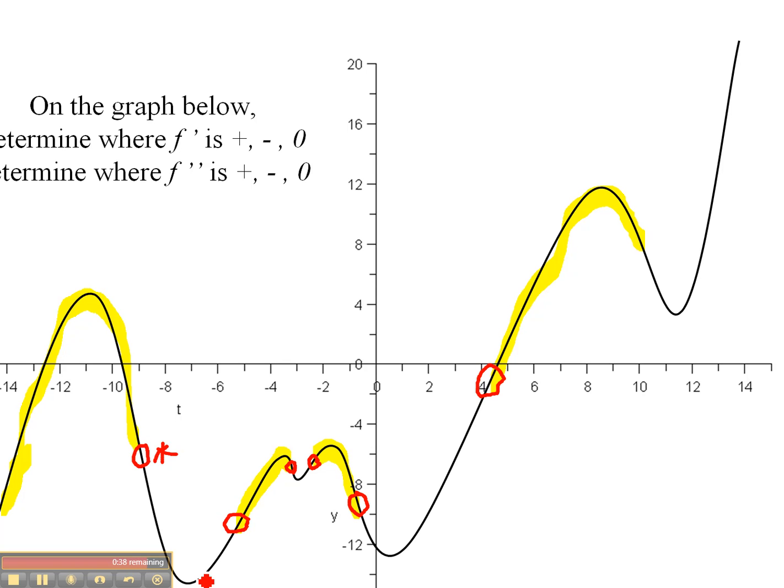So that's going to give us a method for identifying inflection points — it will be very similar to the first derivative test. We're going to find where our second derivative is zero or discontinuous, and check to see if the original graph changes concavity at those points.